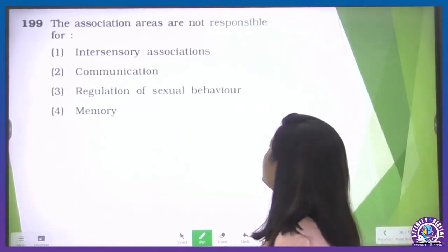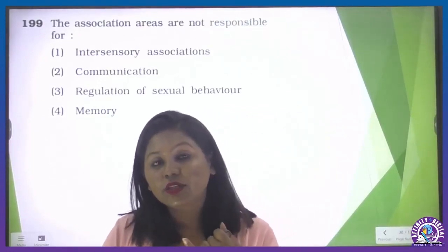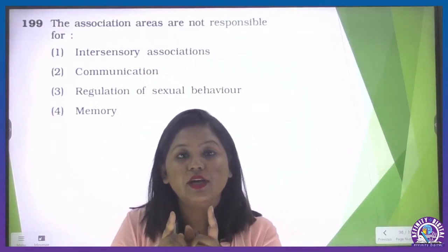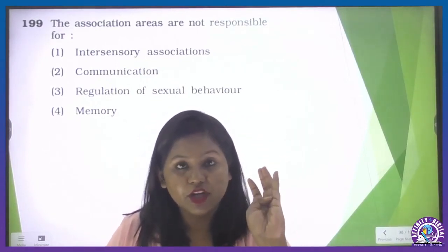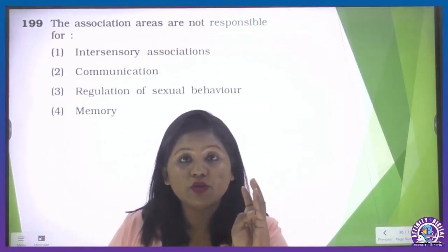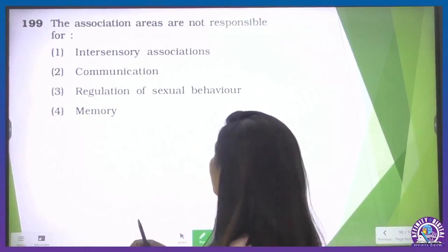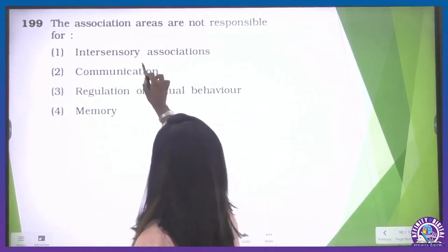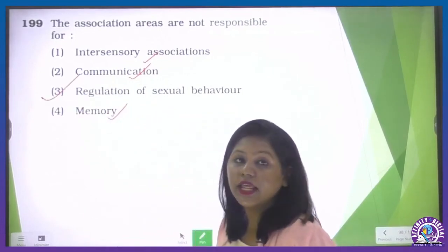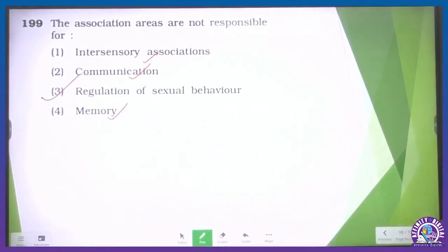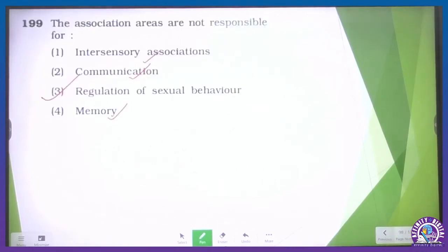The sequence of layers in the adrenal cortex from inner to outer: zona reticularis is the innermost layer, zona fasciculata is the middle layer, and zona glomerulosa is the outermost. So the first option is correct. The association areas of the brain are responsible for intersensory communication, memory, and communication — but they do not control sexual behavior. So the third option is correct for that question.